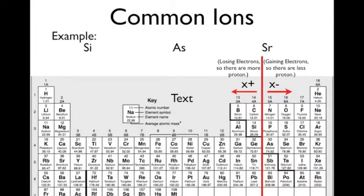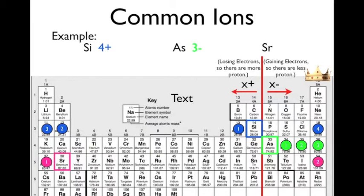Now what common ions, what they want to do, what all these elements and atoms want to do, is they want to be like the noble gases. So they're either going to lose electrons or gain electrons to become like a noble gas. Let's start off with an example here, silicon. What we need to do is find silicon and then count how many elements it has between silicon and argon following the arrow on whichever side of that big red line is. So there's 1, 2, 3, and 4. So silicon has a 4 positive charge. Arsenic, you count 1, 2, 3. Arsenic has a 3 negative charge. Strontium, you count 1, 2. Strontium has a 2 positive charge. And that's all it is for common ions.